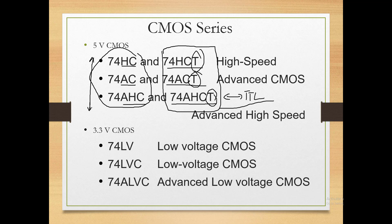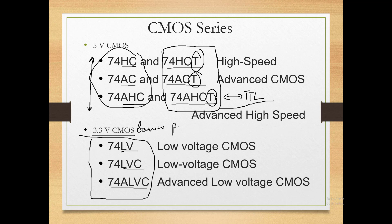For the 3.3-volt CMOS series, we have 74LV (Low Voltage CMOS) and 74LVC (Low Voltage CMOS). 74ALVC stands for Advanced Low Voltage CMOS. This 3.3-volt CMOS has very low power consumption with low power required, and its switching speed is quite good — fast switching speed.